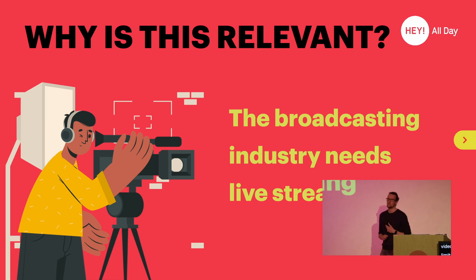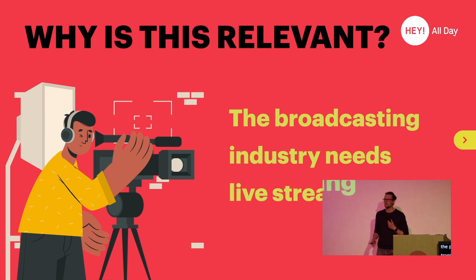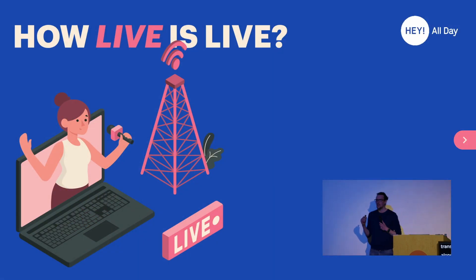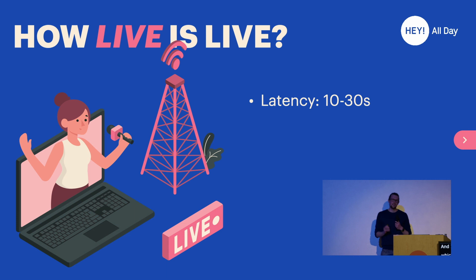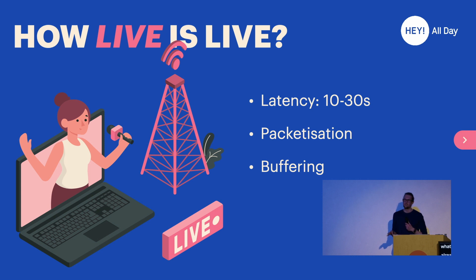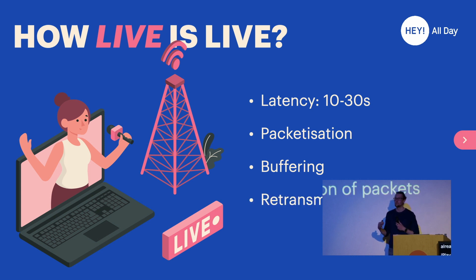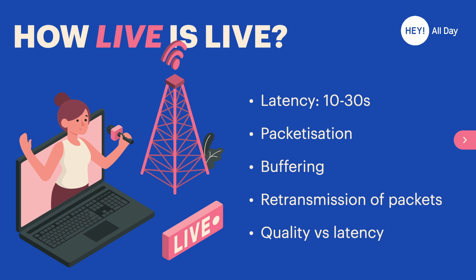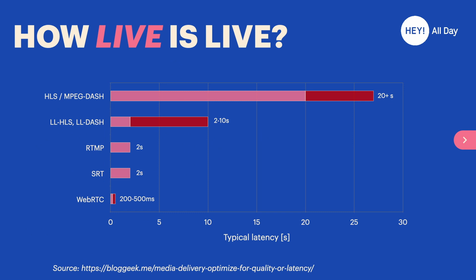The broadcasting industry needs live streaming. But what do I mean — we already have it, right? You can watch live shows on iPlayer and YouTube and whatnot. But how live is live streaming? It turns out that the vast majority of video being streamed on the internet has a latency of 10 to 30 seconds. So when you're watching something live, it actually comes with a delay. This has to do with how the video is packetized, the buffering that the video player applies — all done to allow enough time to retransmit any video packets that might be lost along the way, perhaps due to network congestion. In general, there tends to be a trade-off between quality and latency: how high quality you want your video to be and how much latency you have to accept.